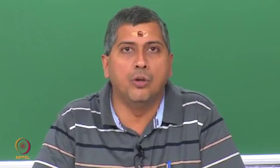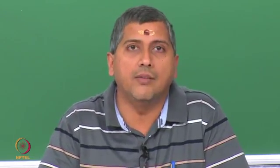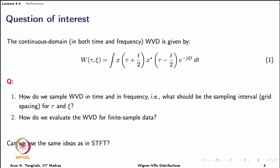It is good to know how these issues are addressed in the Wigner-Ville because the theory is fairly easier to understand. Once we go to the smooth ones, it is difficult to follow what is happening — there is a lot more math there. So let us look at the prime question of interest in this lecture. The continuous time Wigner-Ville is given by this definition, which we have seen in lecture 6.1. The two questions we want to ask are: how do we sample this Wigner-Ville in time and in frequency, and what should be the sampling interval for both tau and z — the time and frequency axes — and are there any challenges in evaluating the Wigner-Ville for finite sample data.